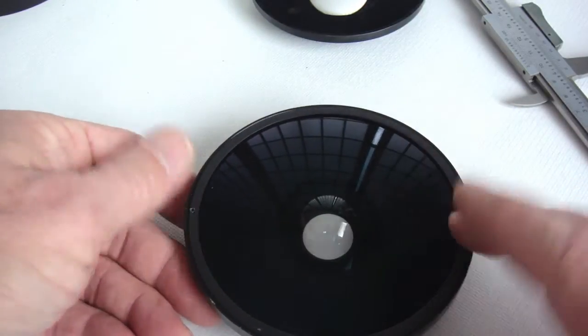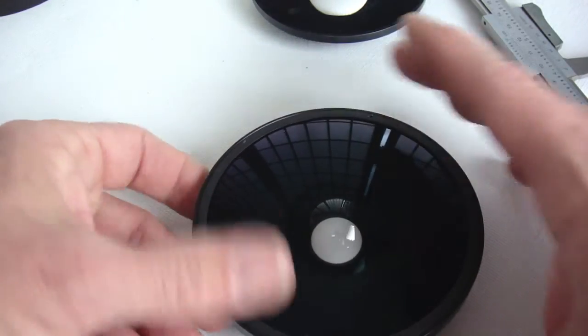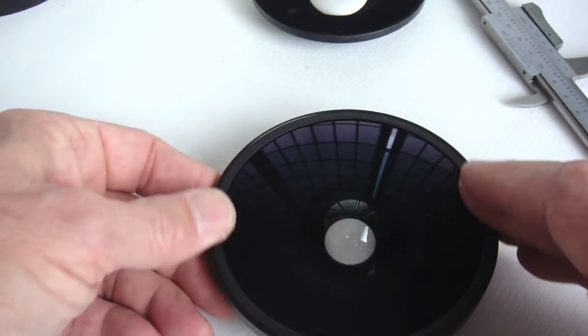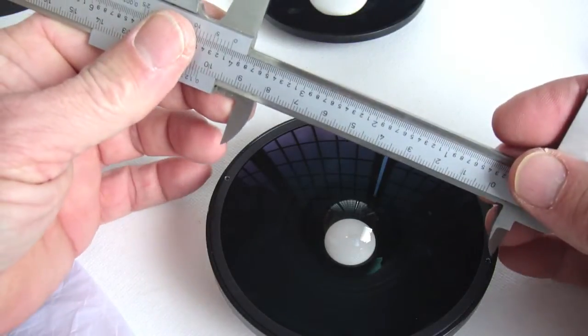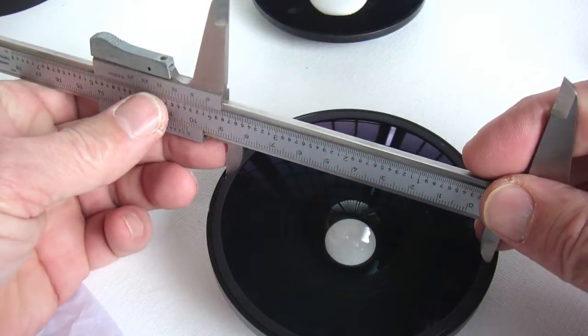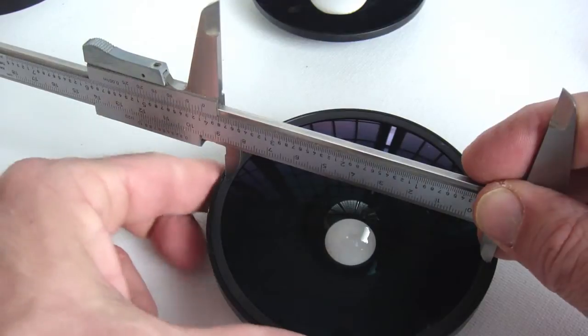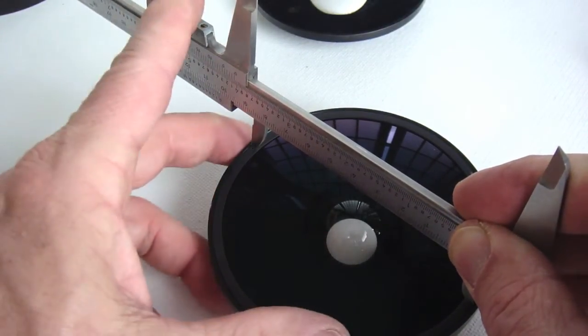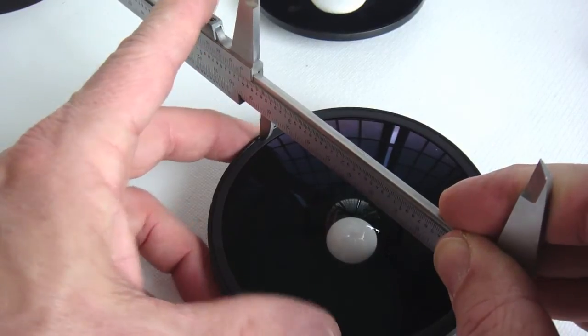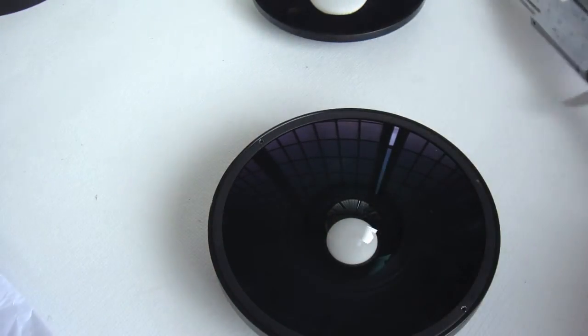Once the retainer is finger tight, it's time to grab your makeshift spanner wrench. With spanner wrench in hand, hold your breath and proceed forward with great care. You don't want to damage the retainer, the lens, or your calipers. One slip would be disastrous. Just past snug is tight enough. Don't try to over-tighten it.